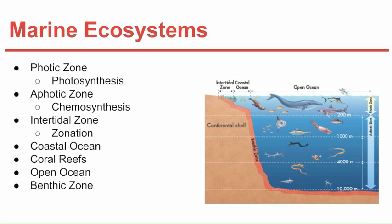The benthic zone covers the entire ocean floor and gets its name from the ocean floor organisms called benthos. These include sea stars, sea anemones, and marine worms, which feed on the chemosynthetic producers at the bottom of the ocean.